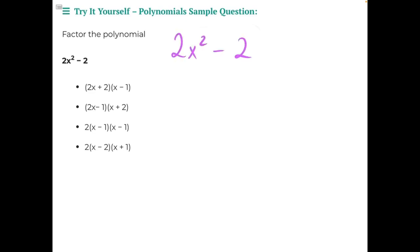If we take a look at both of our terms and see what factor they may have in common, I see that they both have 2 in common. So let's factor out the 2, that would leave behind x squared minus 2 divided by 2, which would just give us 1.